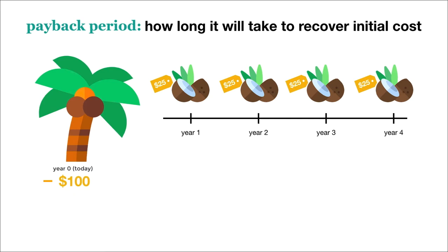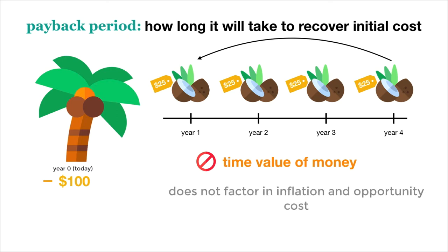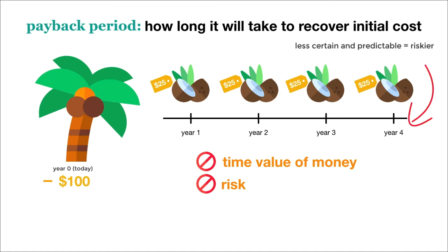For one thing, the payback period fails to adjust our cash flows for the time value of money. As we already know, the $25 we receive in four years is actually worth less than the $25 we spent today due to factors like inflation and opportunity cost. The second issue with the payback period is that it ignores risk, which is also related to the time value of money. Cash flows we receive further into the future are less certain and predictable, and thus riskier than cash flows today.